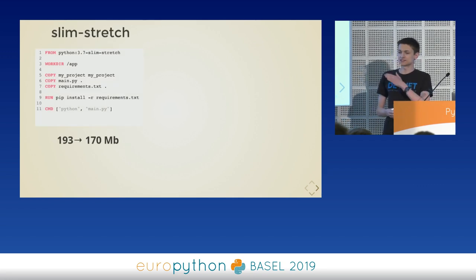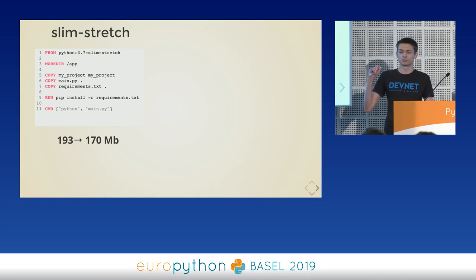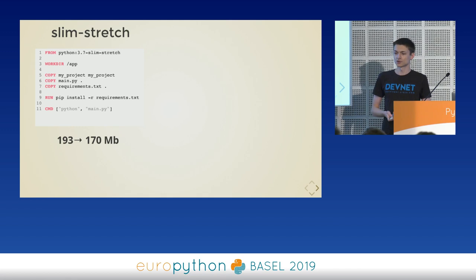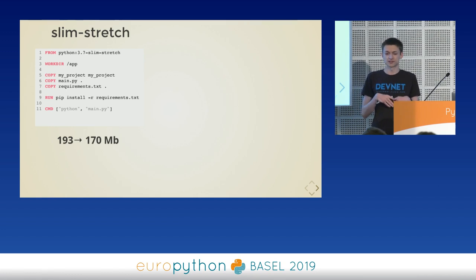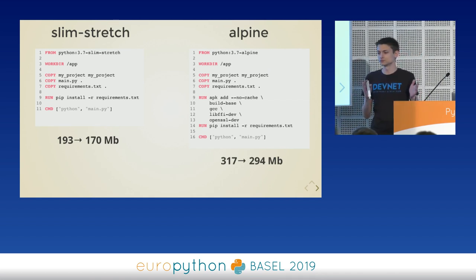Applying more specific COPY statements — copying just my Python module and main.py instead of the whole directory — reduces the size further. The reason is that I had a venv on my host that previously got copied to the image and now it's excluded. The same applies to Alpine, where we get around 20MB savings from doing that.